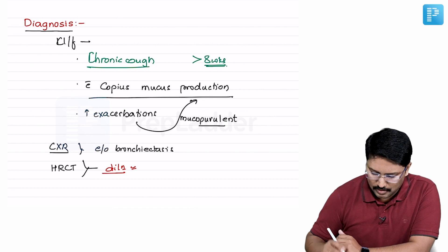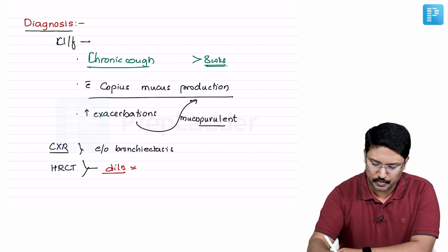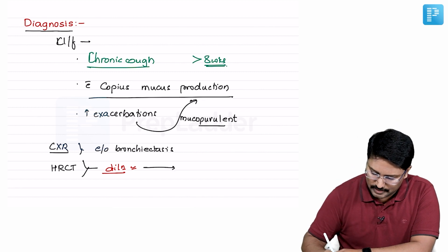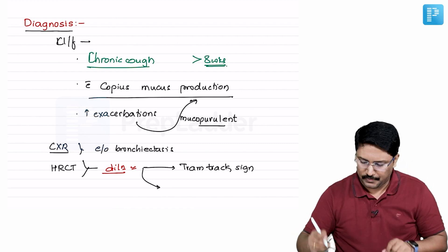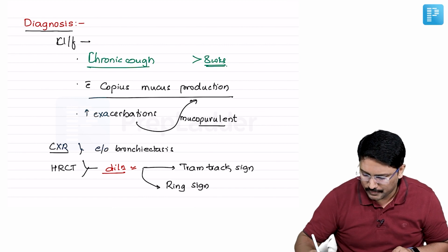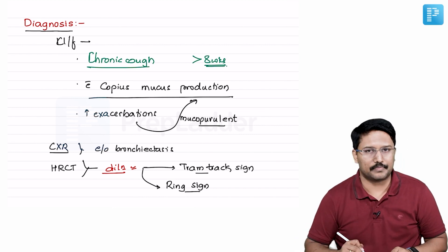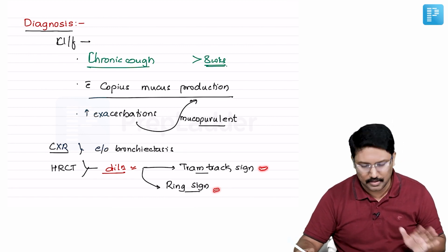This dilation, particularly in case of the tubular bronchiectasis, leads to presentation in the form of two important signs. One is called tram track sign - you know the trams running in Kolkata. And the second one is known as ring sign or signet ring sign. These are better appreciated on HRCT rather than on your chest x-ray. These are particularly about a patient having tubular bronchiectasis.